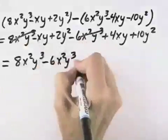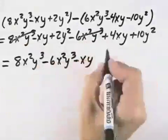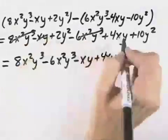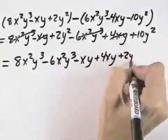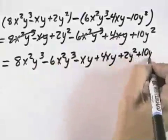Then we have xy terms. We have a minus xy and a plus 4xy, so we can group those together. And finally, our y² terms are plus 2y² plus 10y².